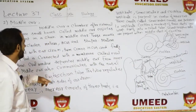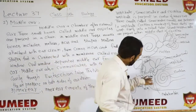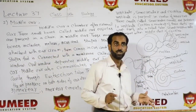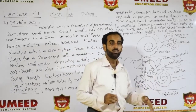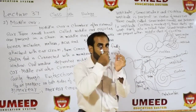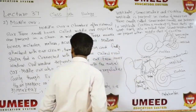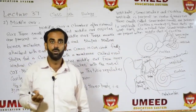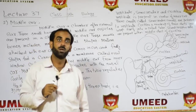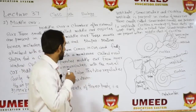The middle ear communicates with the nasal cavity through the Eustachian tube. This tube is connected to our nose. If we put drops in the ear, it feels like it in our nose, and it also goes into the mouth.